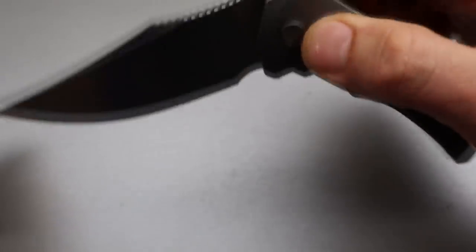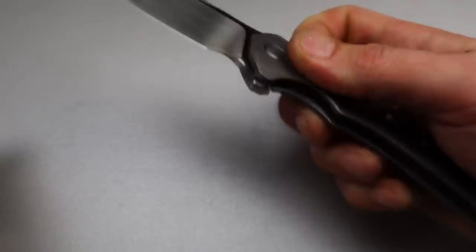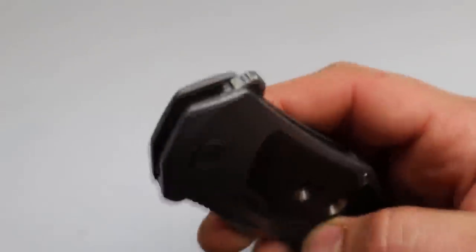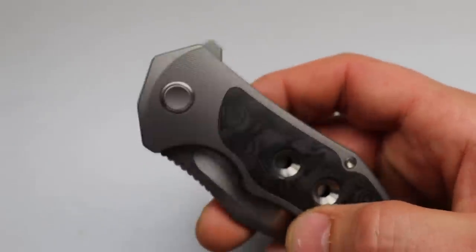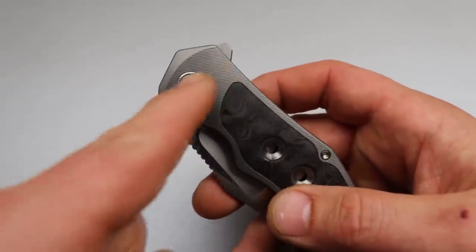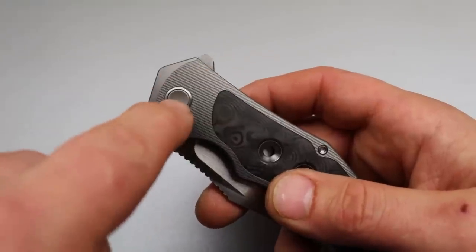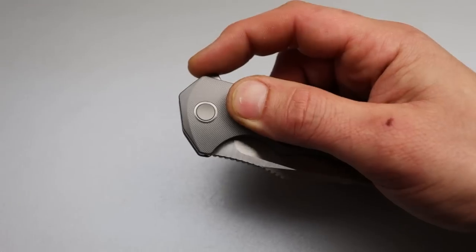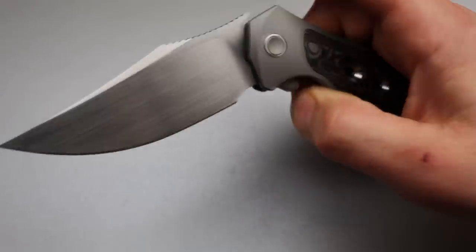Super smooth. And then listen to that detent. You can hear that detent really suck the blade back in. And then with the deployment, the flipper tab is super comfortable and it's positioned perfectly. The distance away from the center of the pivot and then the height of it, when you break that detent, it kicks out with authority.